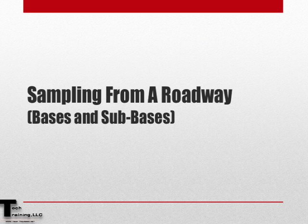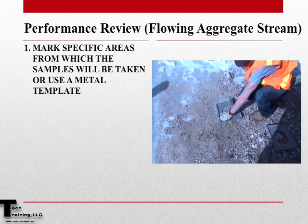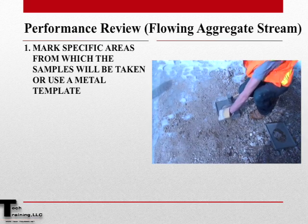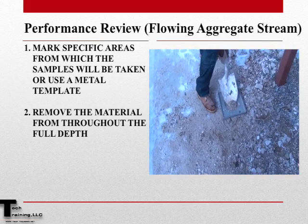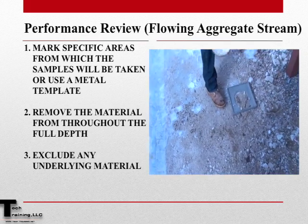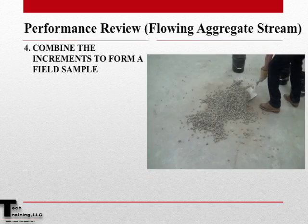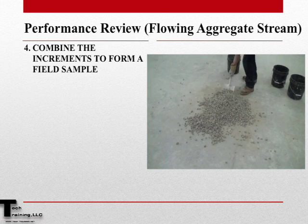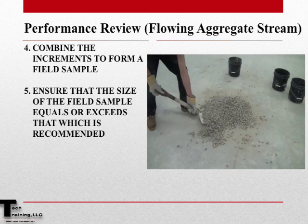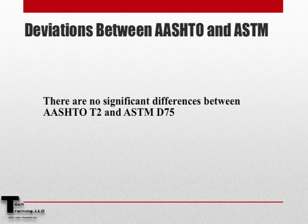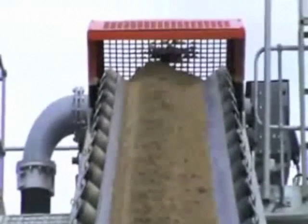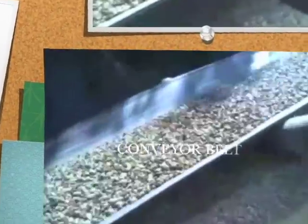Lastly, let's summarize sampling from a road base. First, you'll need to mark the specific areas from where the samples will be taken, or use some type of a metal template. Get the sample from the entire depth and exclude the underlying material. Combine your increments to form your field sample and ensure that the size of the field sample equals or exceeds that which is recommended. There are no significant differences between AASHTO T2 and ASTM D75. And this concludes AASHTO T2 and ASTM D75's Standard Practice for Sampling Aggregates.